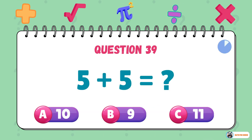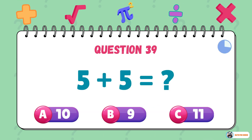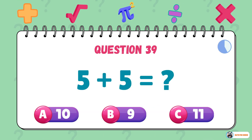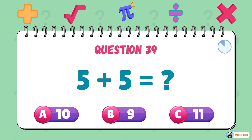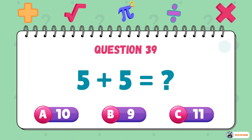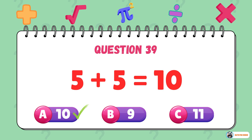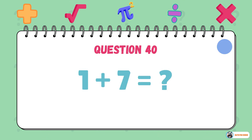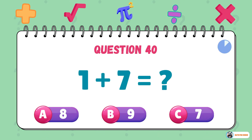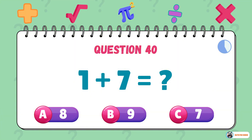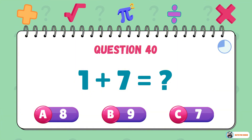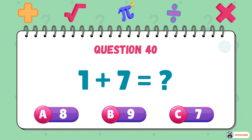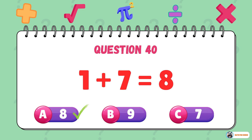What is 5 plus 5? The answer is 10. What is 1 plus 7? The answer is 8.